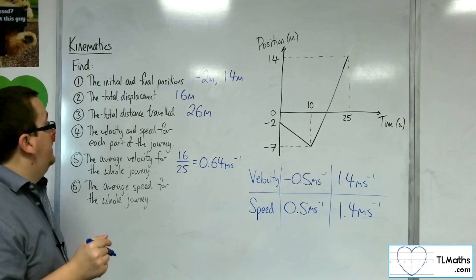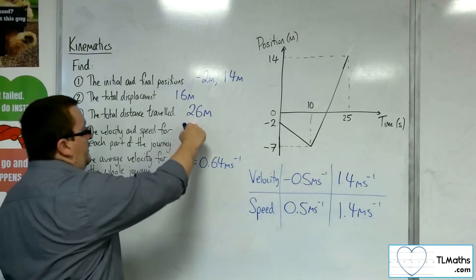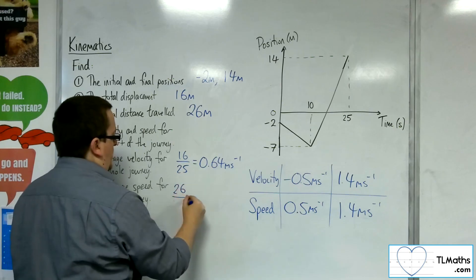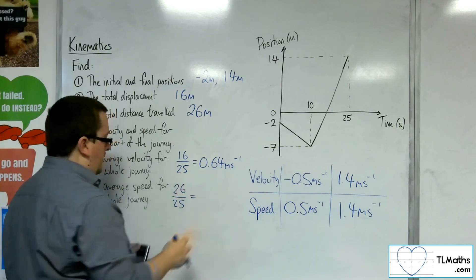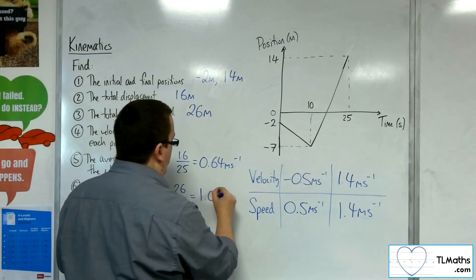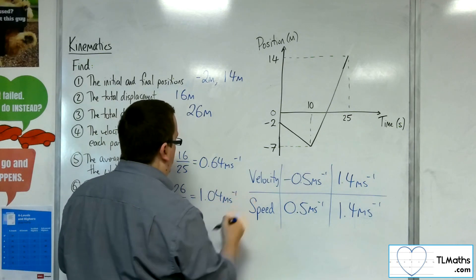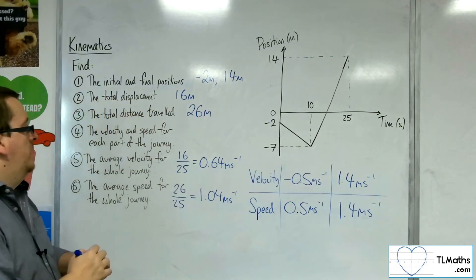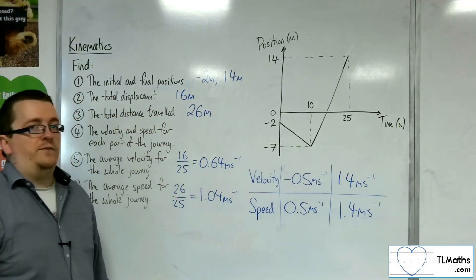The average speed—well, I cover 26 metres in 25 seconds. So 26 divided by 25 is 1.04 metres per second. And that is the average speed for the journey.